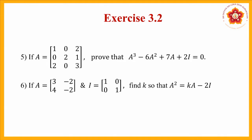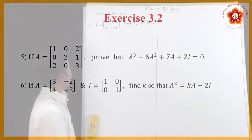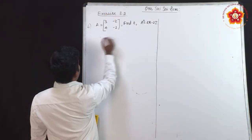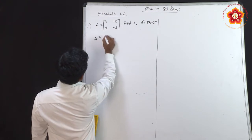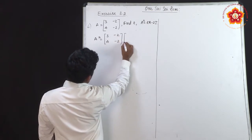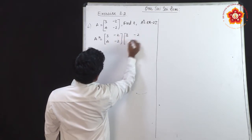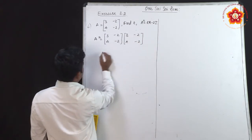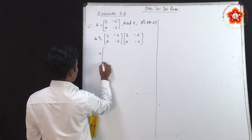Next problem: matrix A = [3, -2; 4, -2] and identity matrix of order 2 are given. Using the equation A² = KA - 2I, we have to find the value of K. First, let us find A².